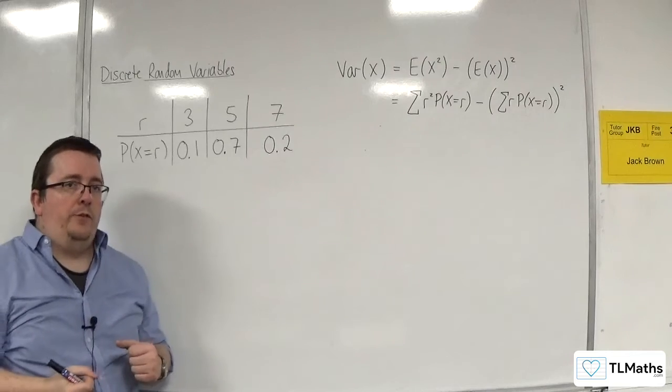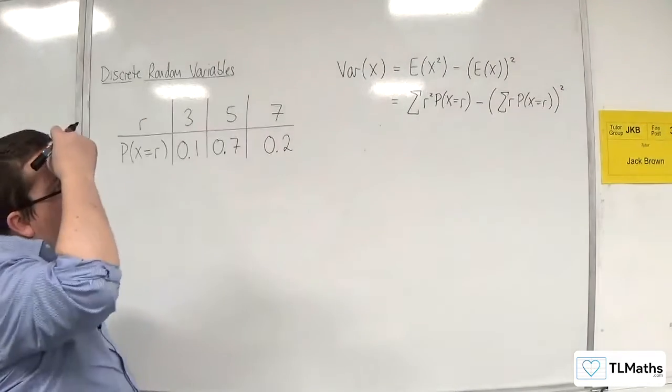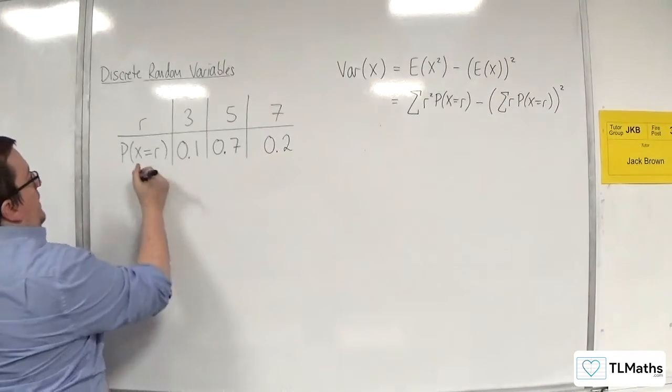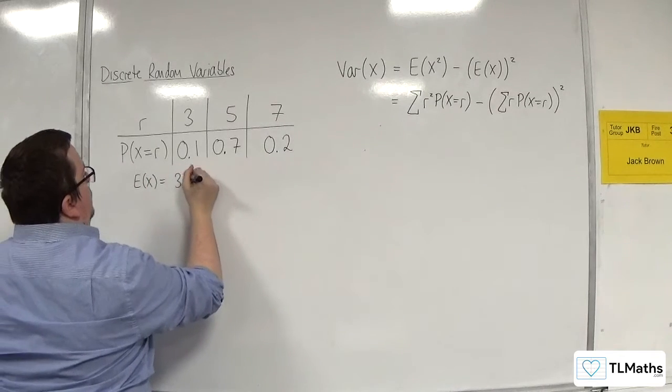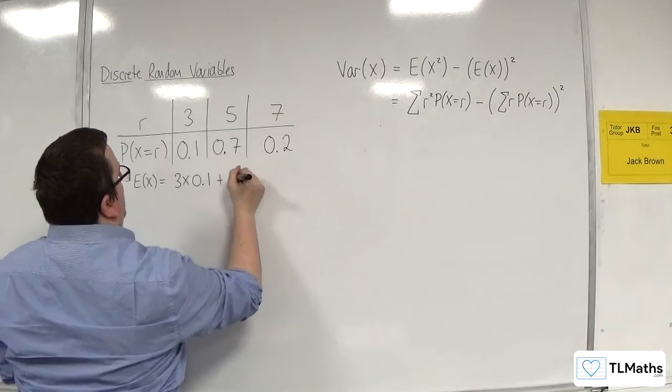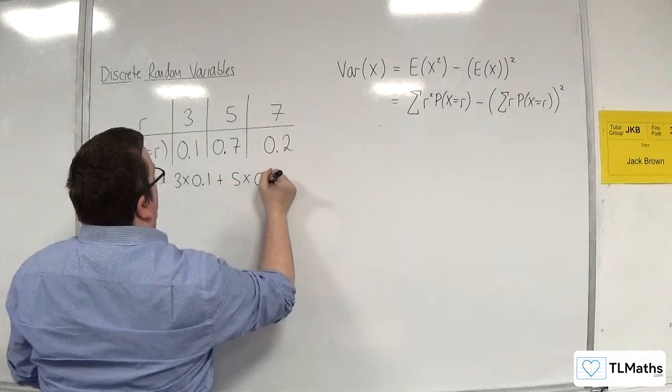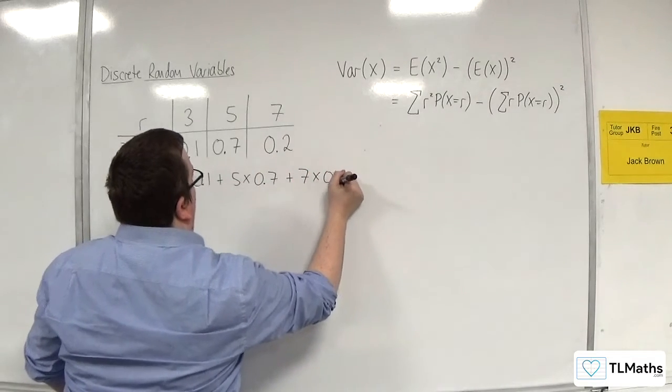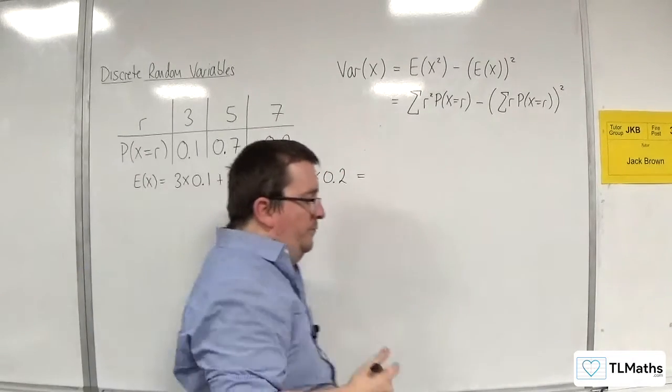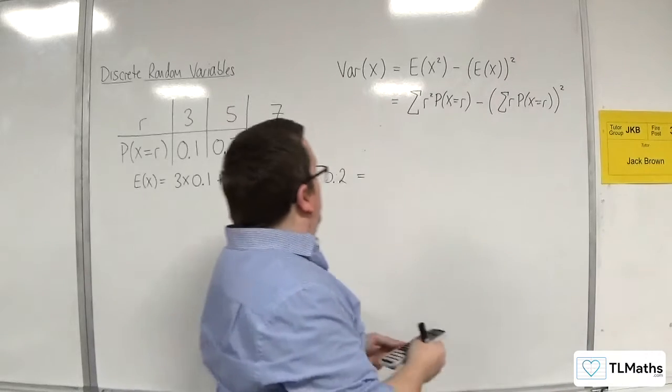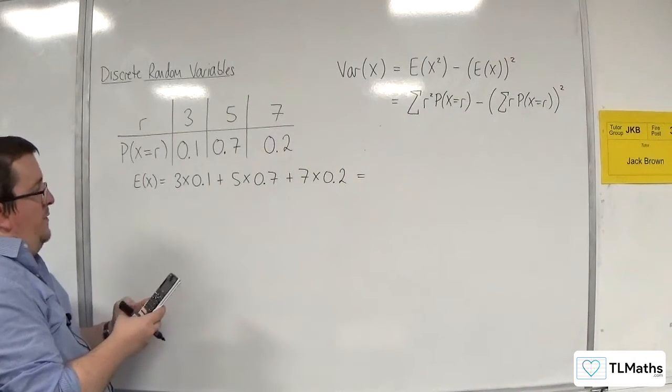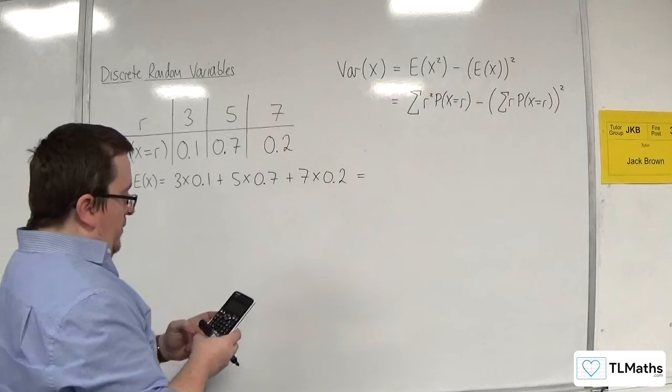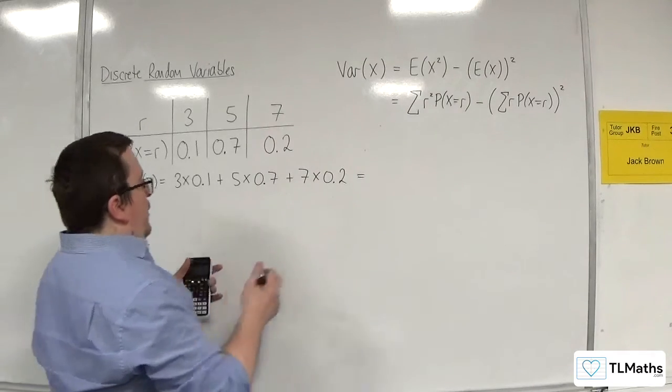OK, so let's calculate this for this probability distribution here. So, the first thing I need to do is I need to work out E(X). So, E(X) is 3 times 0.1 plus 5 times 0.7 plus 7 times 0.2. So, 3 lots of 0.1, 5 lots of 0.7 and 7 lots of 0.2 added together, and we get 5.2.